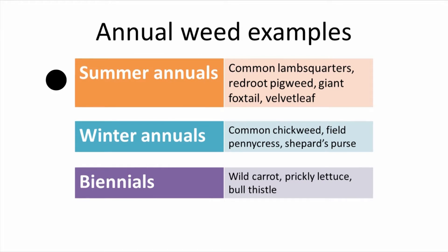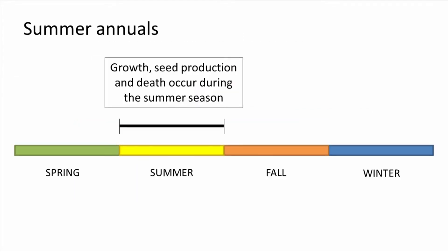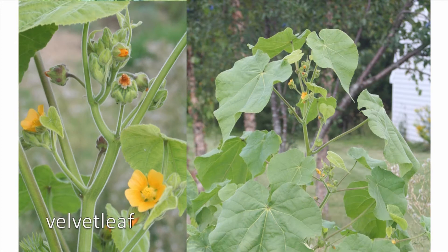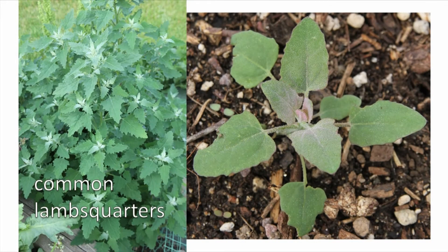The three subcategories are summer annuals, winter annuals, and biennials. Summer annuals germinate in the early summer, grow, reproduce by seed, and die by the time fall arrives. Some common examples include pigweed, velvet leaf, and common lamb's quarters.